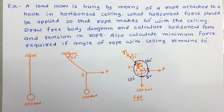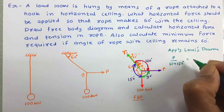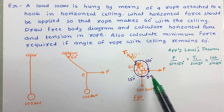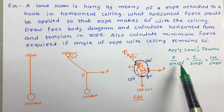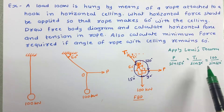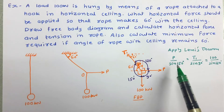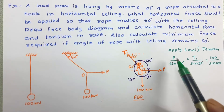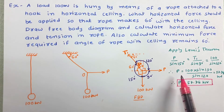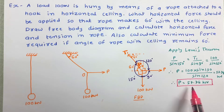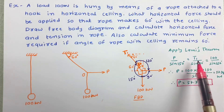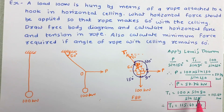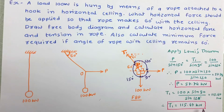Now let us apply Lamy's theorem. According to Lamy's theorem: P upon sin 150 equals T upon sin 90, equals 100 upon sin 120. Now let us calculate P and T1. By comparing the first two ratios, the value of P is obtained as 57.74 kilonewton. Comparing the appropriate pair to work out T1, the value of T1 is obtained as 115.47 kilonewton. So the first task of the problem is completed.